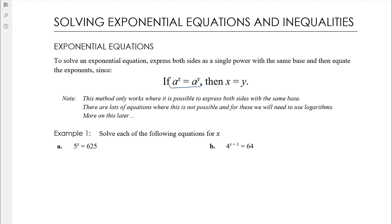I want to be clear about what's not happening — you're not cancelling the a's, you're not dividing by a. If you divide a to the power of x by a, you don't get x; you get a to the x minus 1. So you're not cancelling the a's at all. You are simply equating the powers — saying if a to the power of one thing equals a to the power of another thing, the only way that's true is if those two things are actually equal.